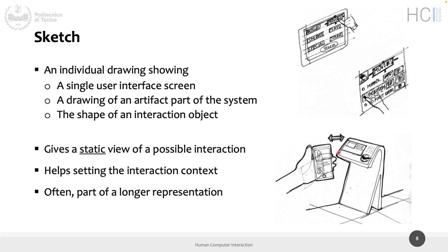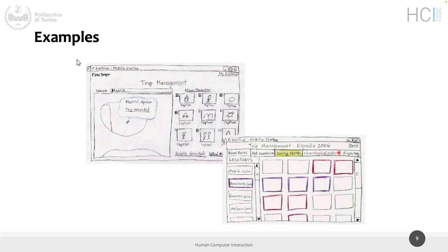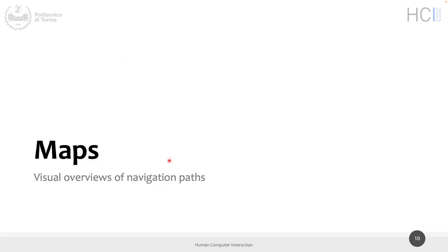Here are two more examples of sketches of user interfaces, hand-drawn. This one should be a map - Madrid, Spain - showing trip management: what you want to do is manage a trip. It's hand-drawn and probably took five minutes. It gives an idea of the interaction and it's a valid sketch. A sketch gives a static view and can be part of a longer representation, like a series of sketches in storyboard format.